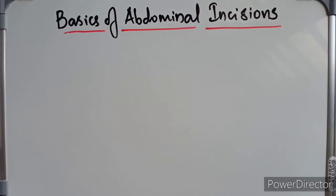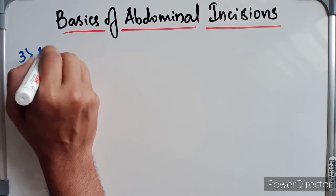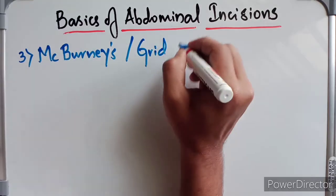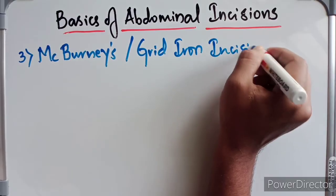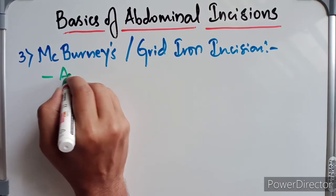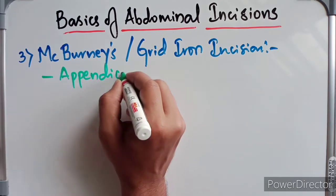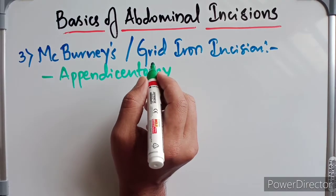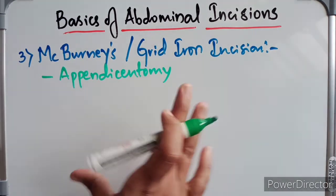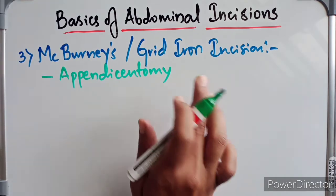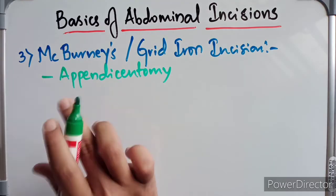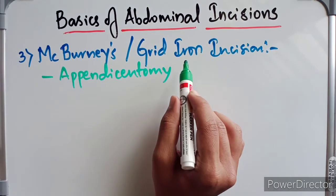Let's discuss about McBurney's incision, or gridiron incision. It is commonly given for appendicectomy — removal of the appendix. It is an oblique incision made in the region of the right iliac fossa, about 2 inches above the anterior superior iliac spine. The McBurney's line runs from the anterior superior iliac spine to the umbilicus, and the McBurney's point is situated at the junction of the medial two-thirds and lateral one-third of that line. There the oblique incision is given.